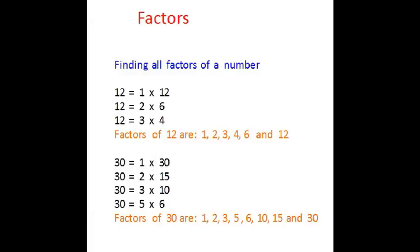Let's take one more number, 30. 30 is 1 multiplied by 30, or 2 multiplied by 15, or 3 tens are 30, and 30 is also 5, 6 are 30. So the factors of 30 are 1, 2, 3, 5, 6, 10, 15 and 30.